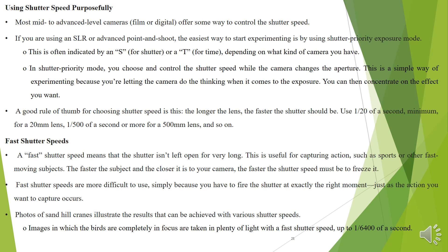Use shutter speed purposefully. Most mid to advanced level cameras, film or digital, offer some way to control the shutter speed. If you are using an SLR or advanced point-and-shoot, the easiest way to start experimenting is by using shutter priority exposure mode. This is often indicated by an S for shutter or T for time, depending on what kind of camera you have. In shutter priority mode, you choose and control the shutter speed while the camera adjusts the aperture — simply a way to experiment by letting the camera handle the exposure.